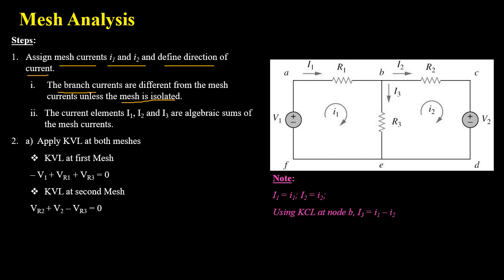Mesh currents are represented by small i1 and small i2, while branch currents through elements are represented by capital I1, capital I2, and capital I3. The branch current through an element equals the algebraic sum of mesh currents. Capital I1 equals small i1, and capital I2 equals small i2. The current through the common element R3 — capital I3 — equals the difference of mesh currents i1 and i2, found using KCL at node B.